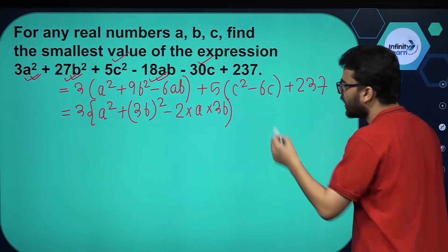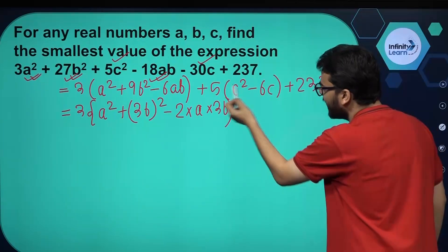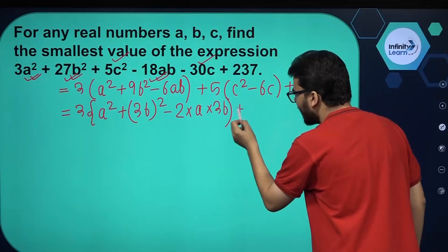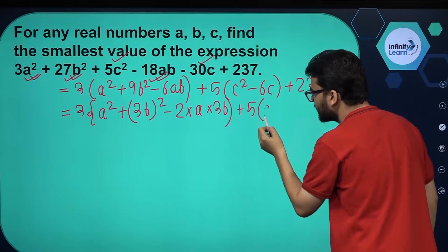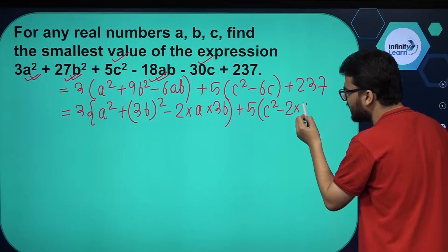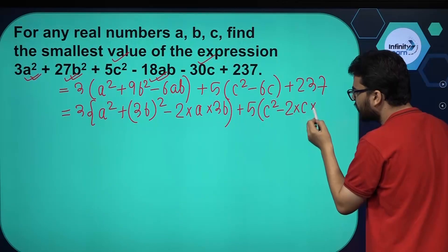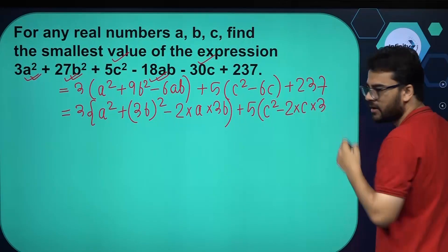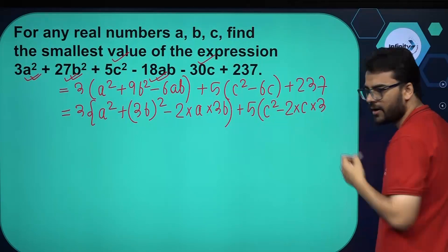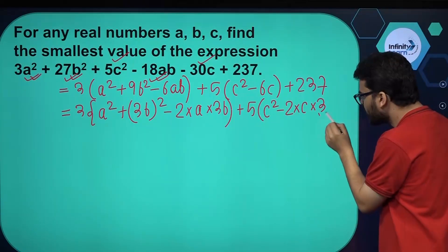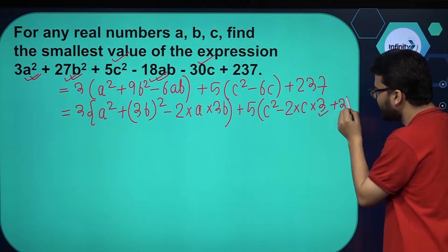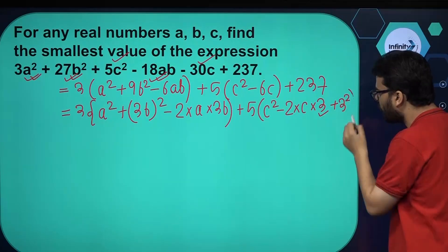Now for the c terms, this is nothing but c squared minus 2 times c times 3. In order to complete this square, we need 3 squared, so we add 3 squared here.